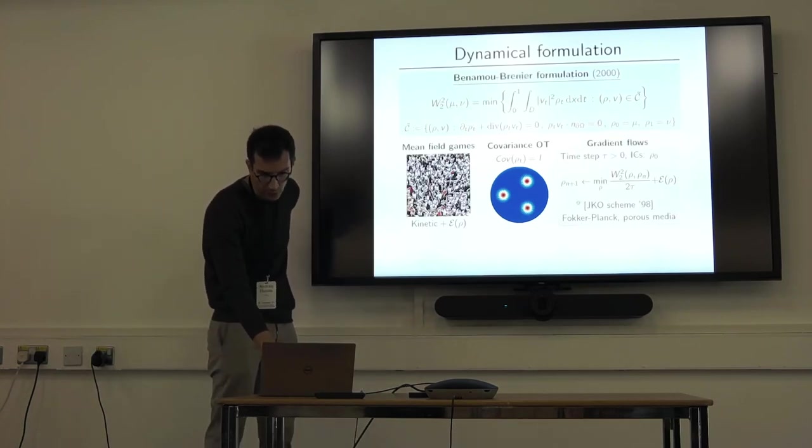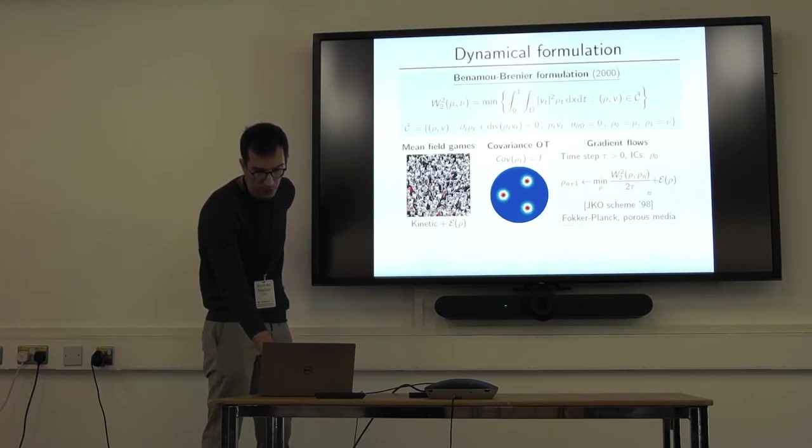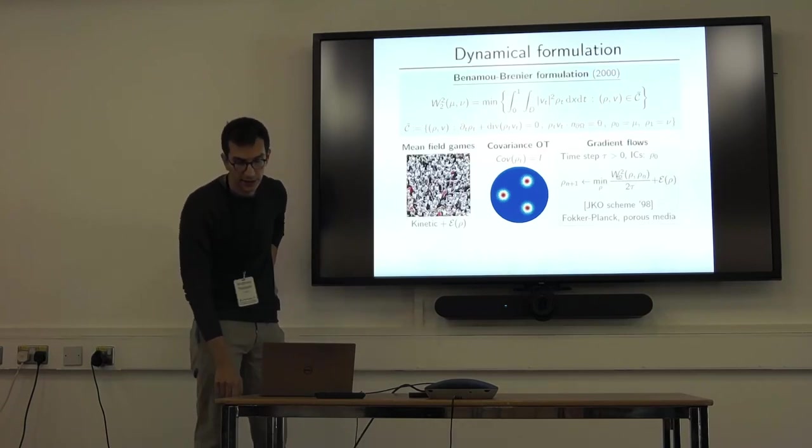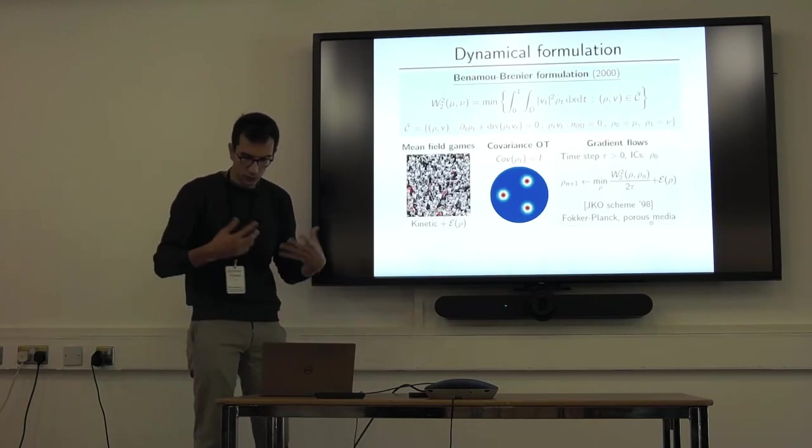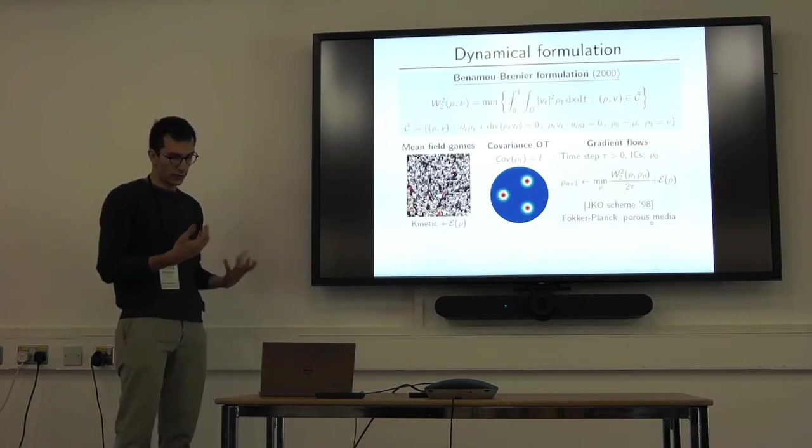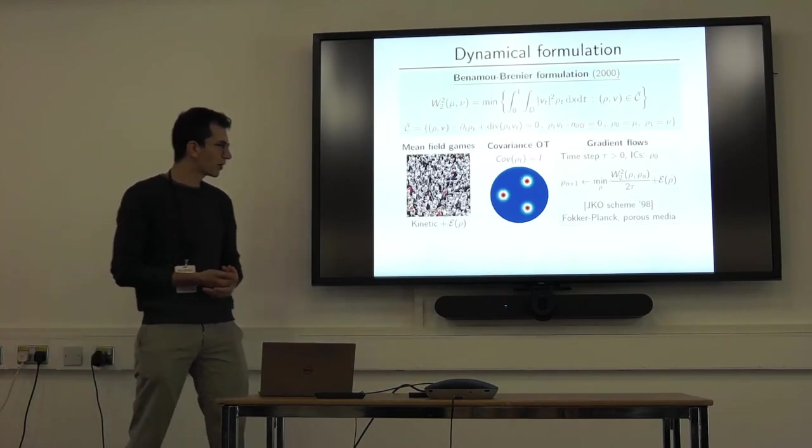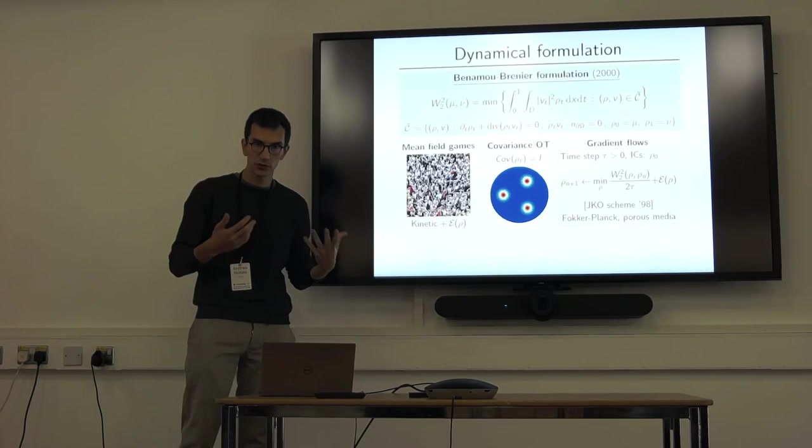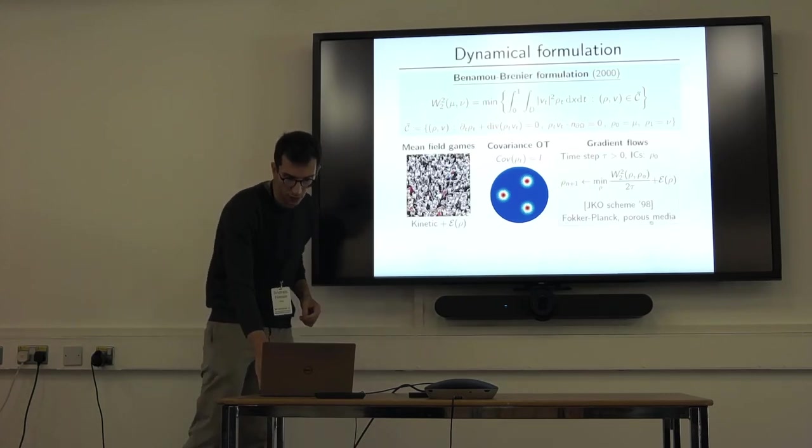And also you can talk about using this optimal transport problem as a building block to construct discretization, time discretization for specific PDEs, and in particular PDEs that have some entropy that's dissipated in time. So this is a numerical scheme, time discretization, so it's a time-stepping procedure. You see that you, I give you a rho n, you can compute rho n plus 1 by solving a minimization problem. And it's some sort of generalized version of the implicit Euler scheme, and you can use it to produce a solution of classical PDEs, for example, the Fokker-Planck equation, the porous medium equation, but also more degenerate type of PDEs.